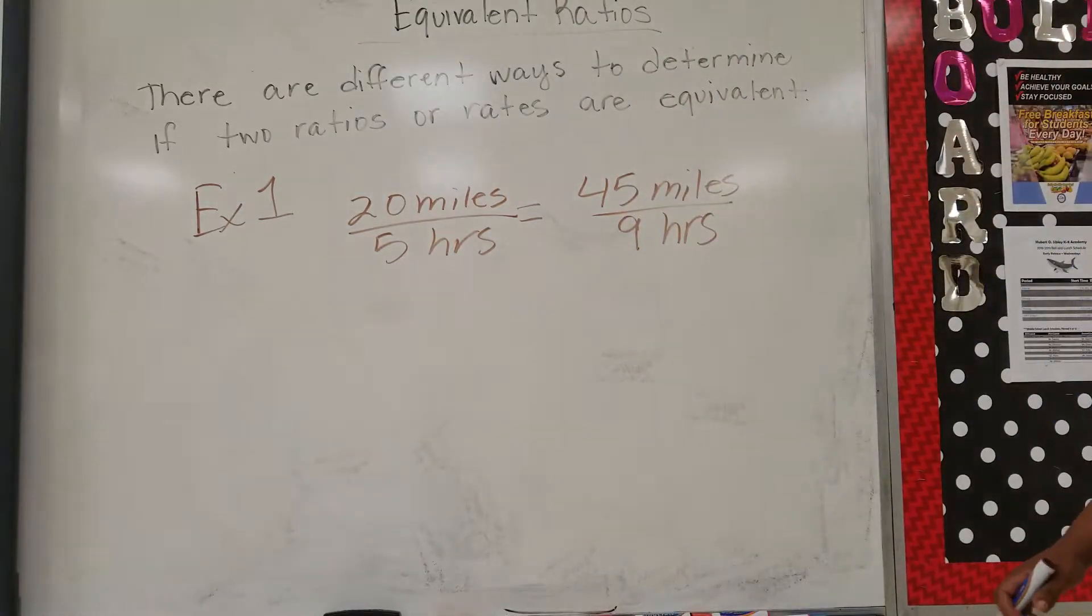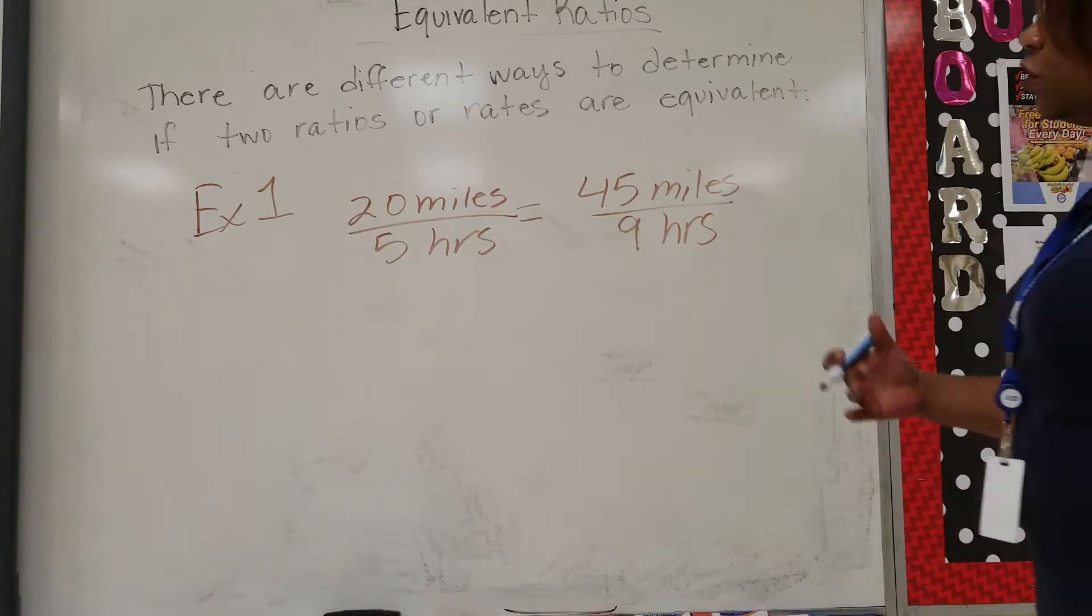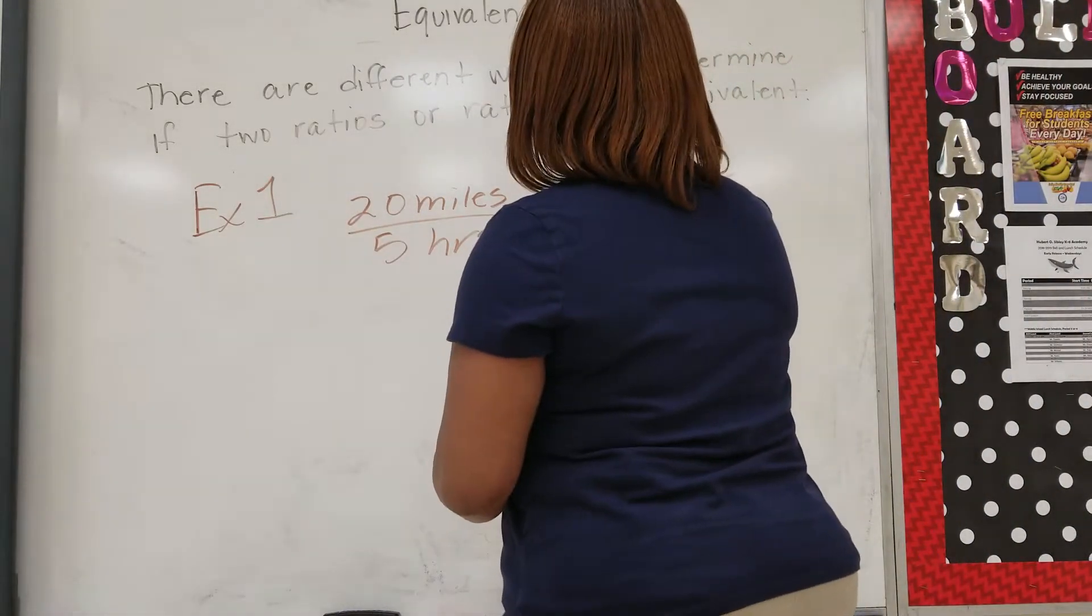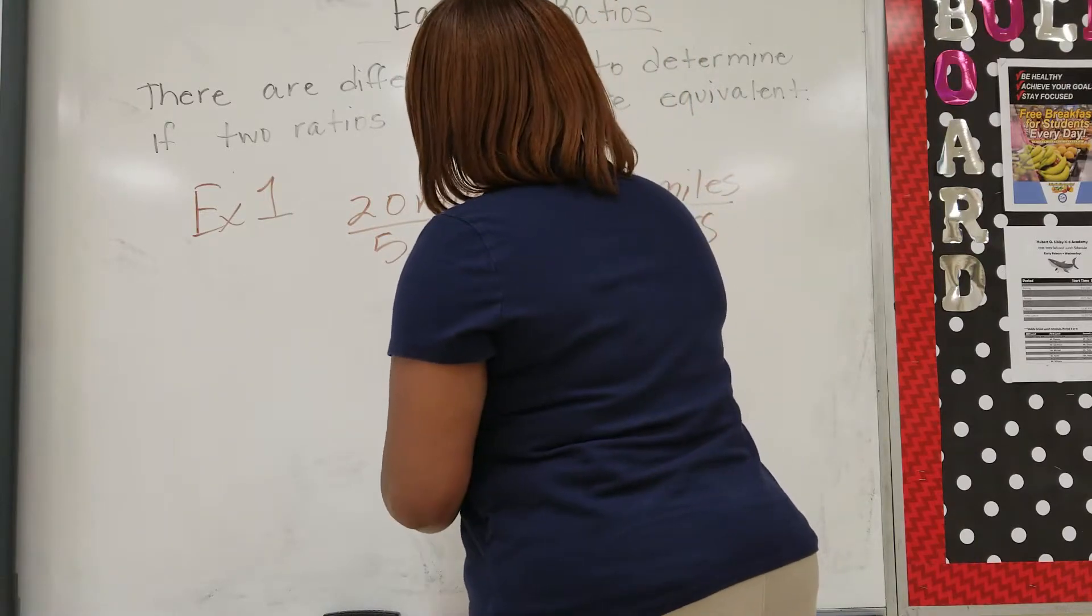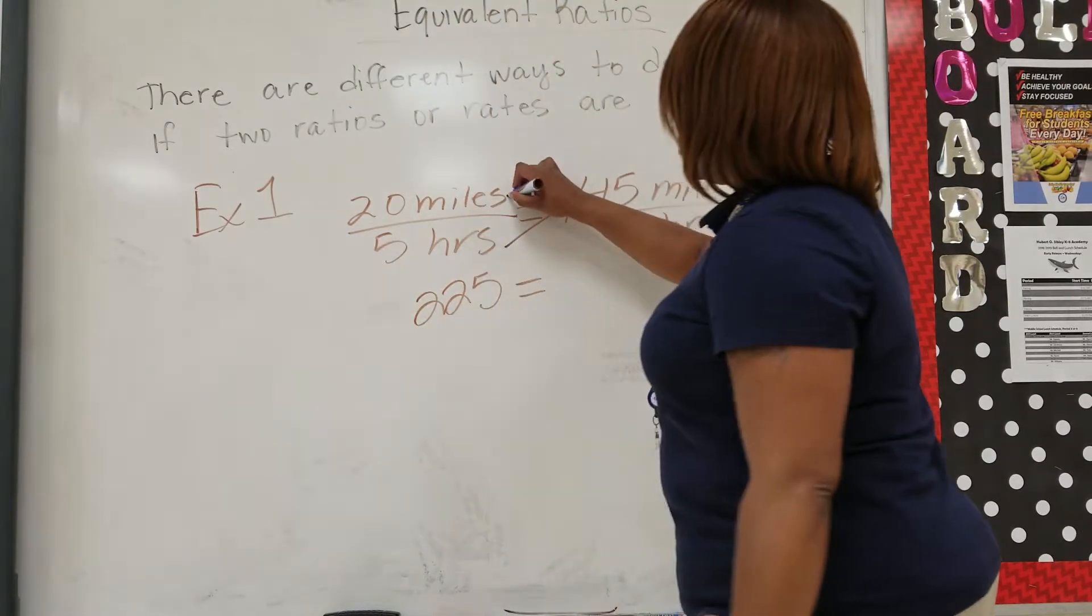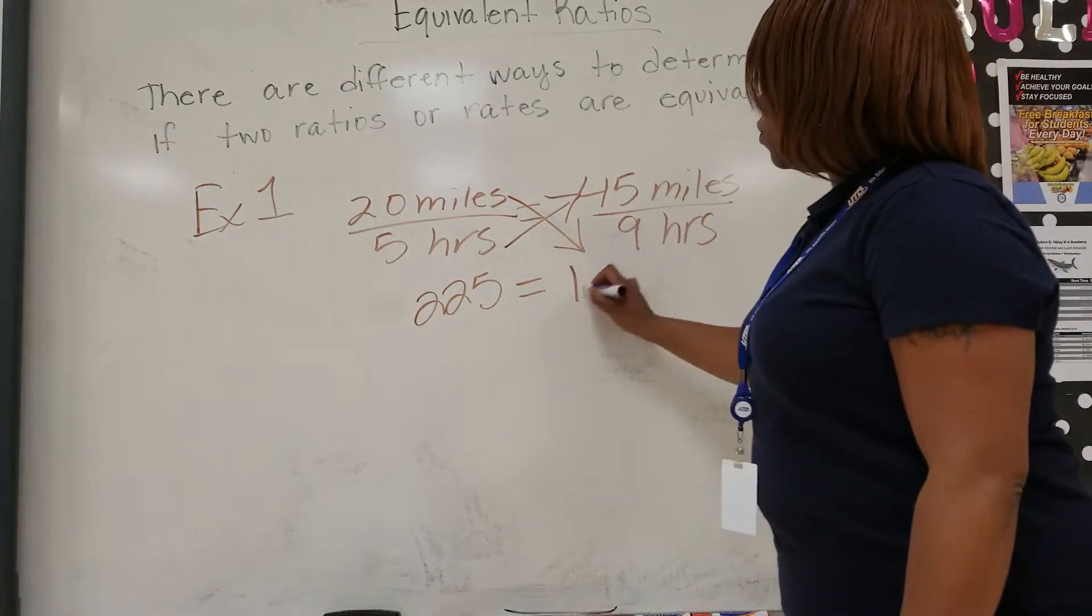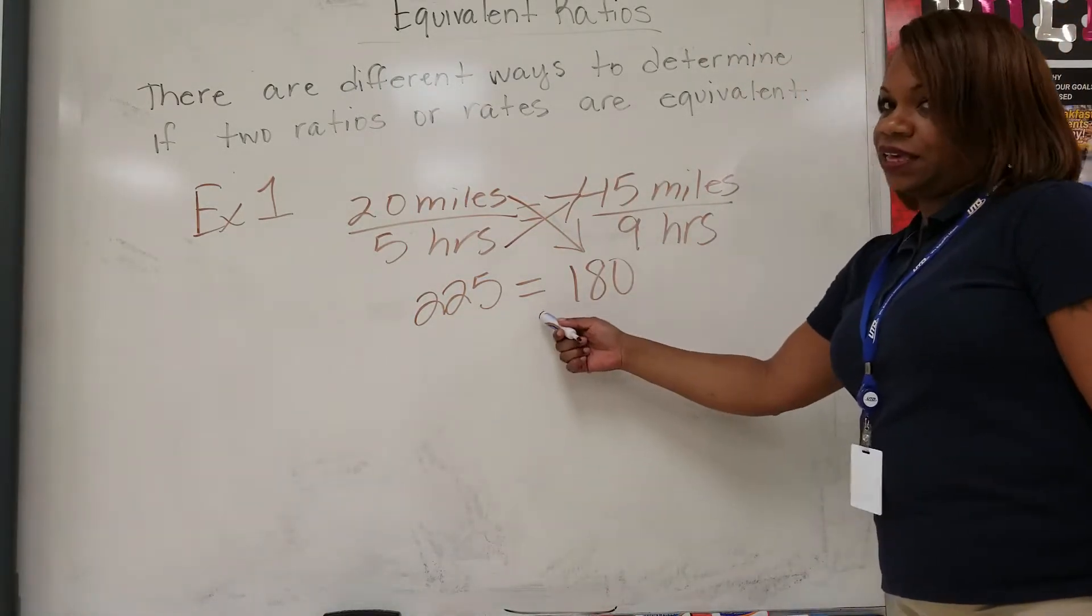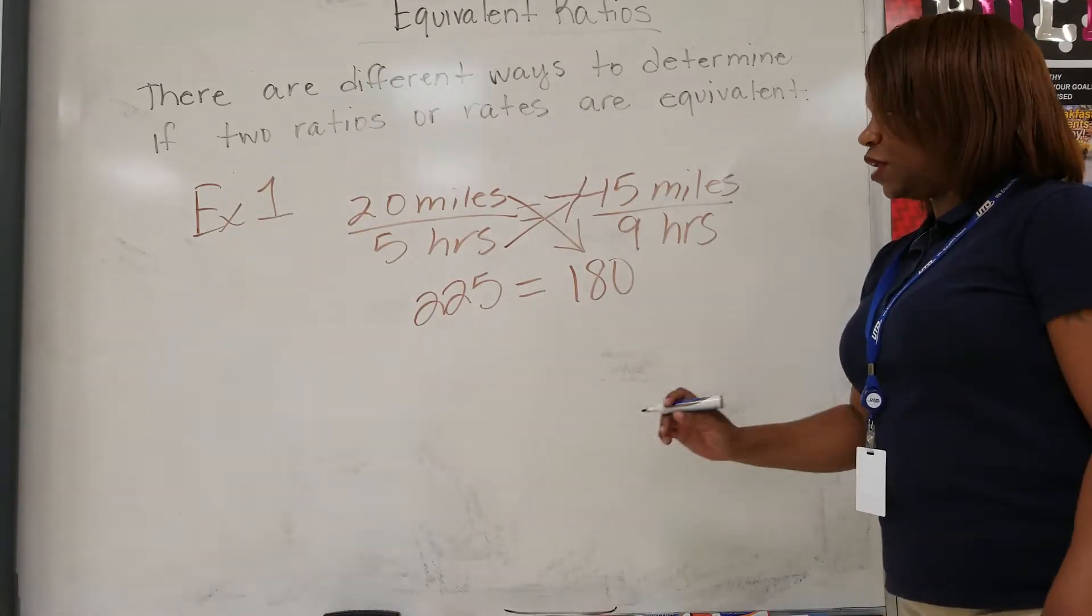Here you have 20 miles to 5 hours equals 45 miles to 9 hours. Are they equivalent? So just like I told you, you can cross multiply. When you do cross multiply, 5 times 45 will give you 225. 20 times 9 will give you 180. 225 does not equal 180, so therefore...